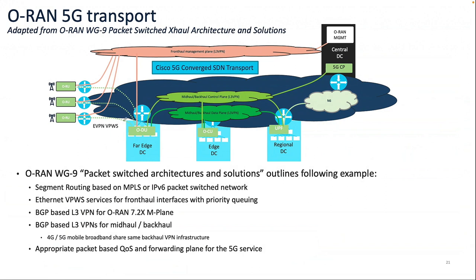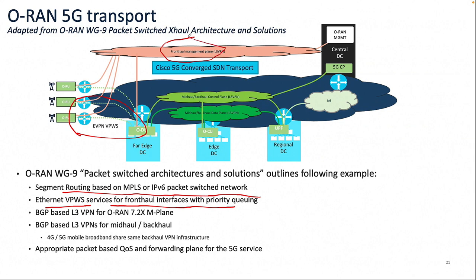I'll show you the different traffic types. Segment routing can be MPLS or v6 in the network. When there's layer two traffic, we use point-to-point VPWS in this case for front haul — that works out well with the underlay SR-MPLS or SRv6. But front haul has three traffic types: management traffic which is L3 — use L3 VPN; untagged multicast — don't need to worry about that; and in mid-haul and backhaul, all traffic is layer three using L3 VPN. You also need to take care of QoS to make sure you get the right queuing priorities for the traffic.